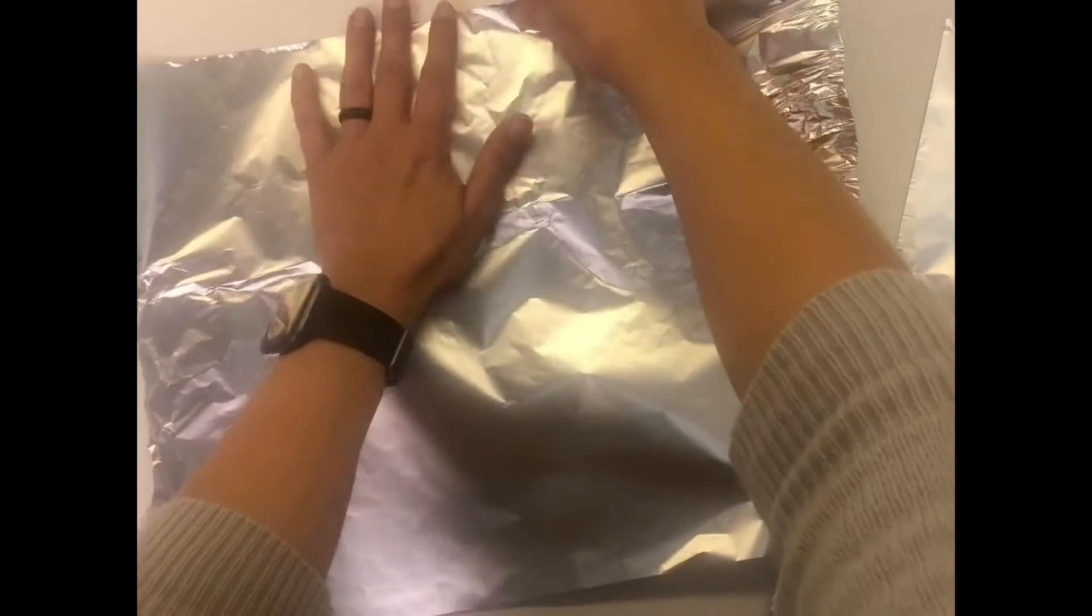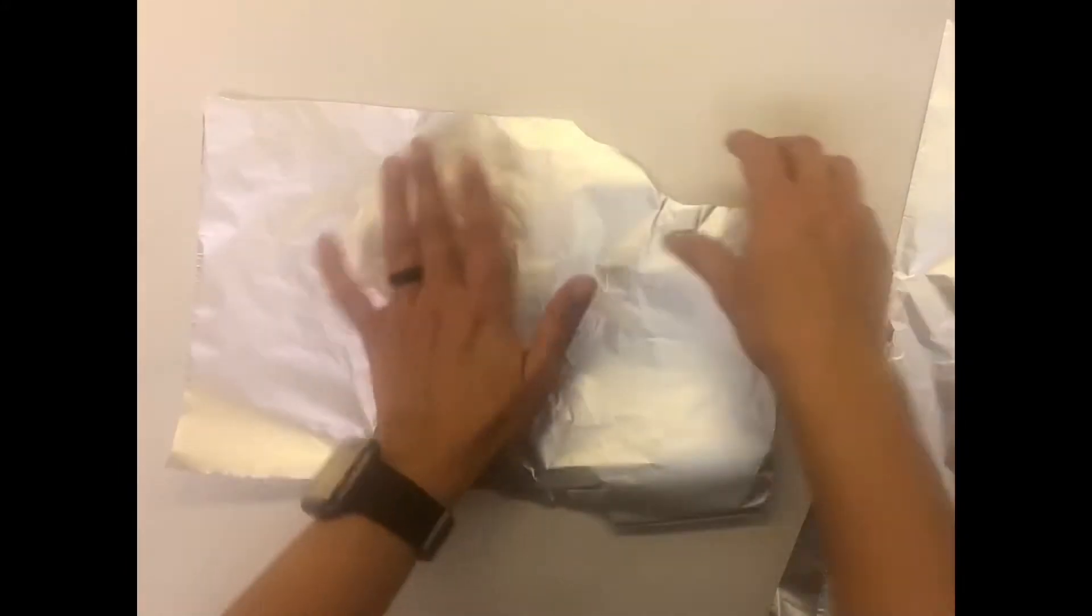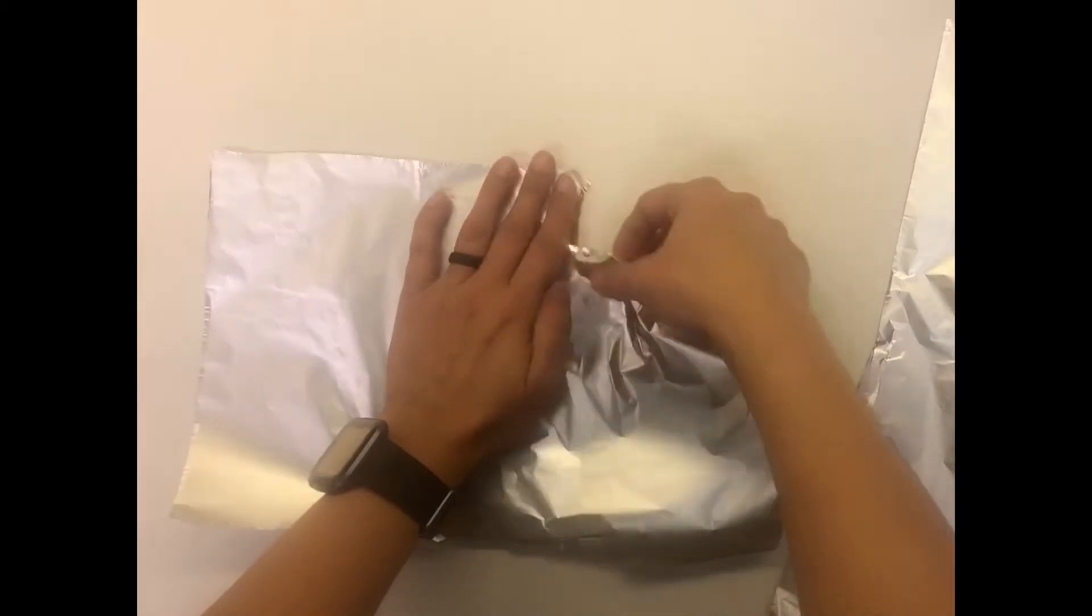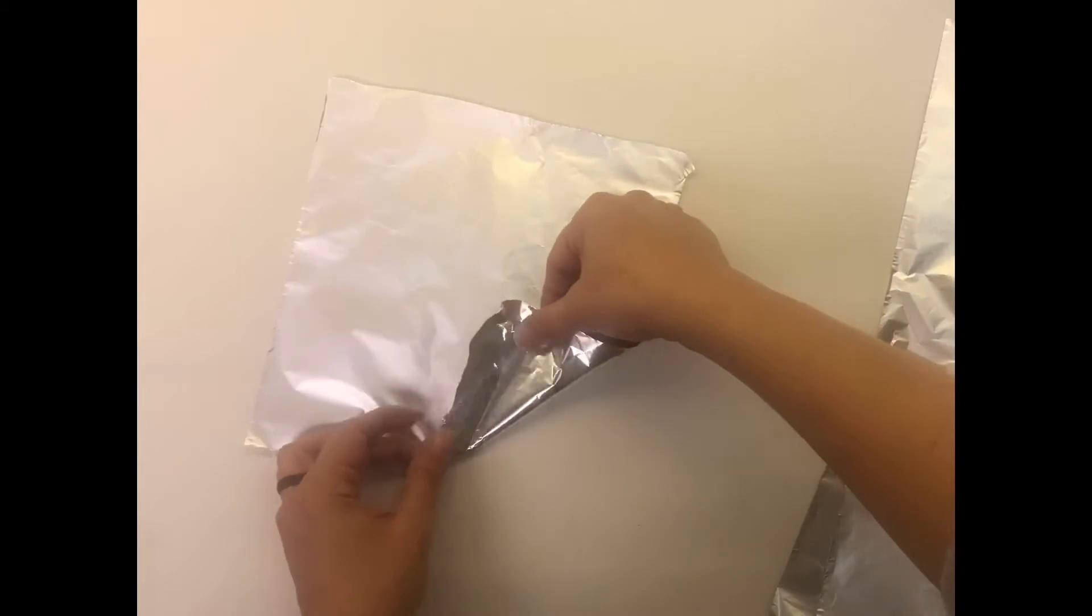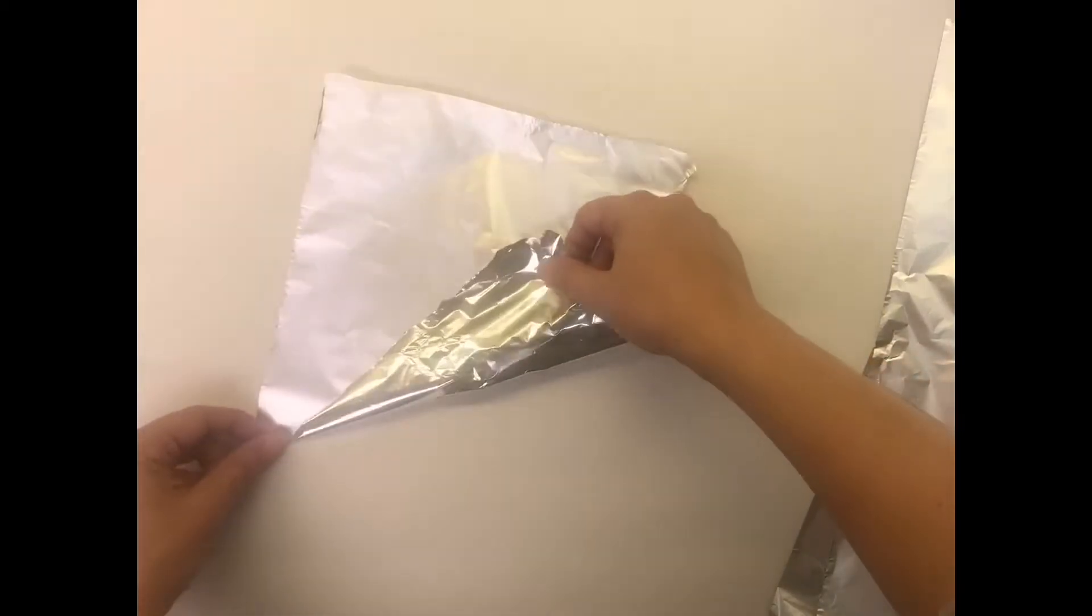But instead of starting with the crunch, we're going to start with a little cone like we did with our first unit. So I'm going to take my foil, rip it into kind of a square shape. And then I'm going to make the beginnings of a little cone.